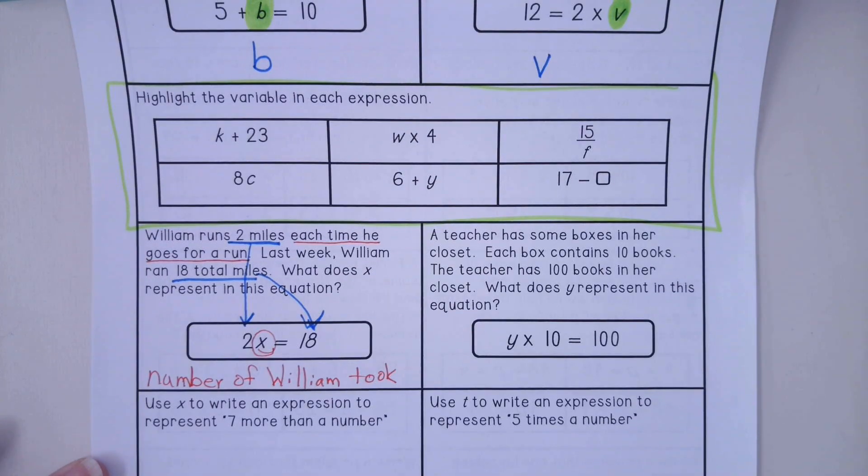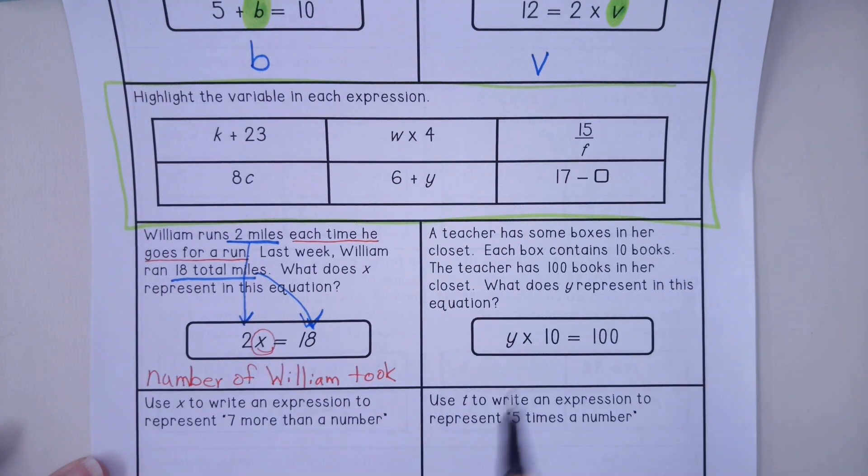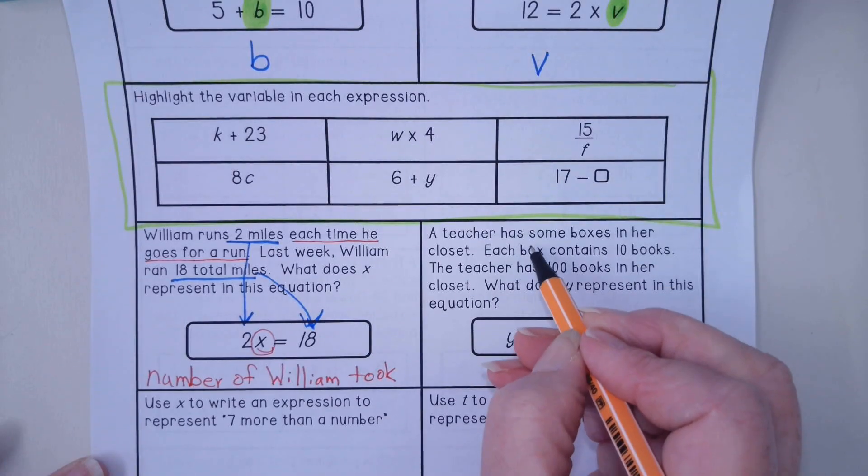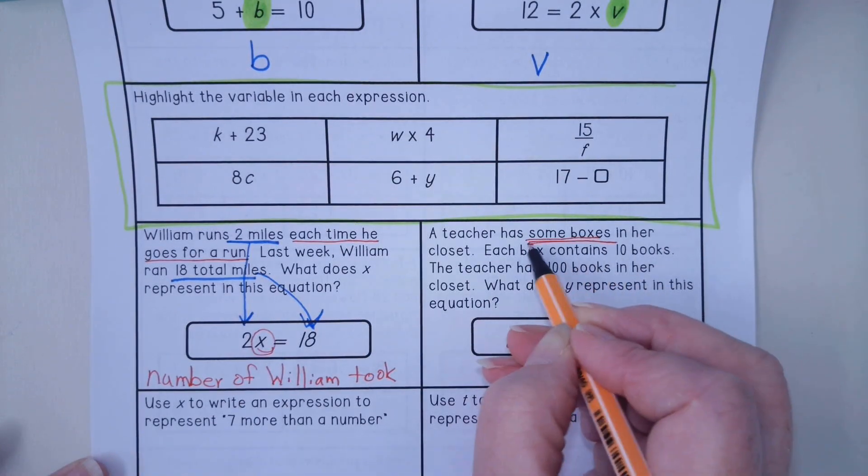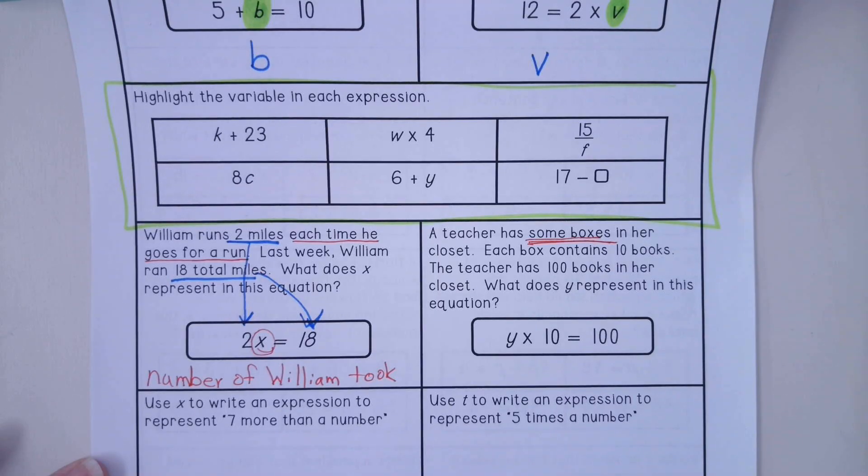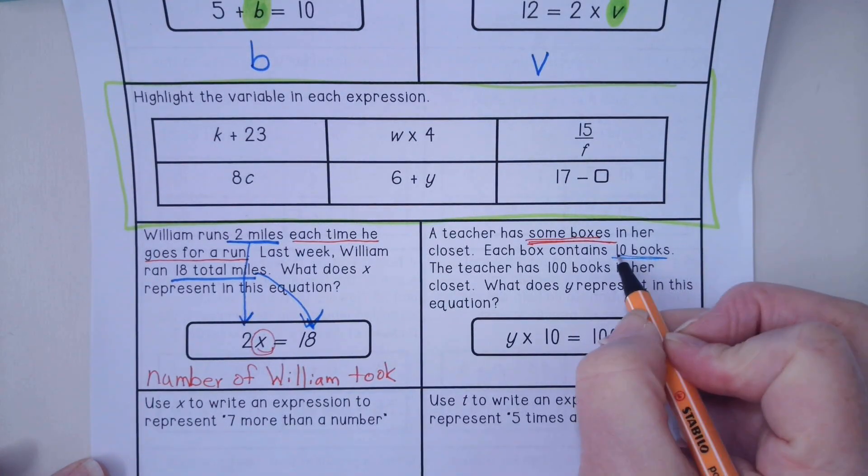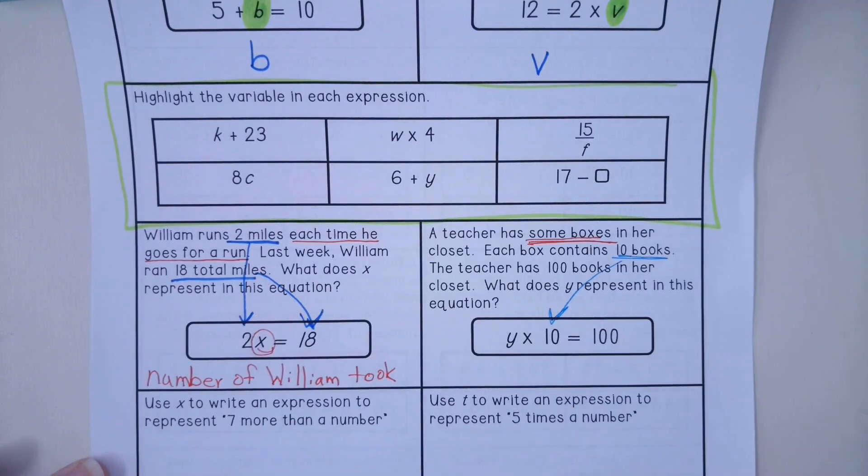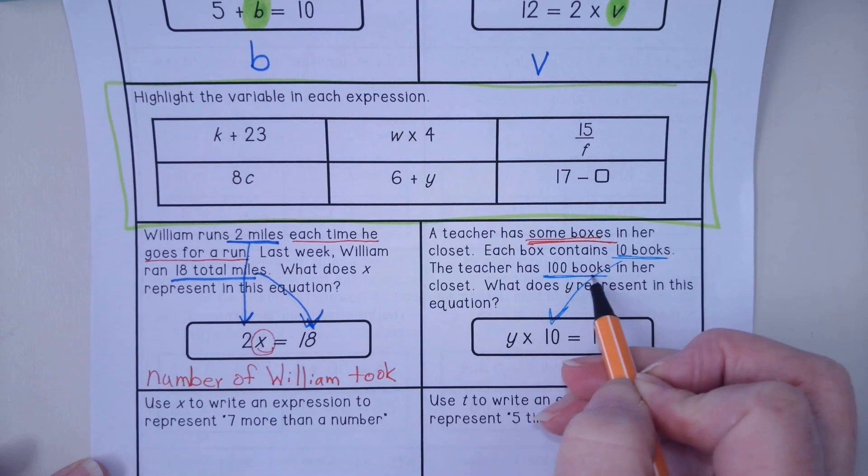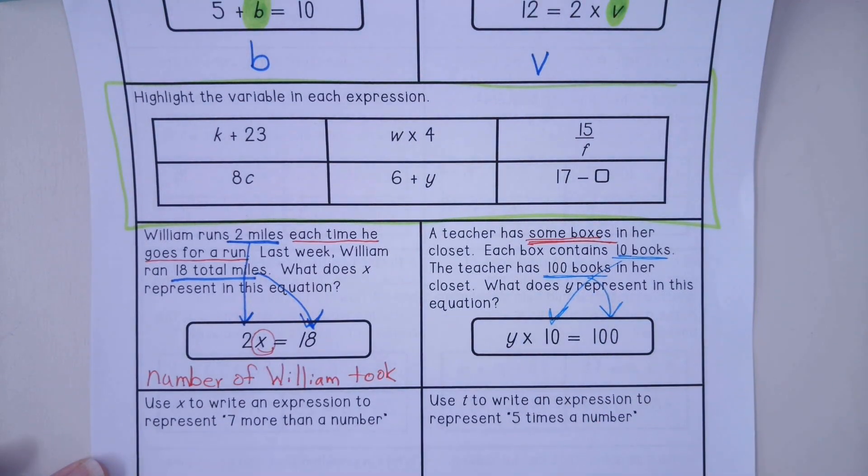All right, I'm going to move over to the next box right here. And it says a teacher has some boxes - that is a really good hint - some boxes in her closet. Each box contains 10 books, so I see the number 10 in our equation. The teacher has 100 books in her closet.